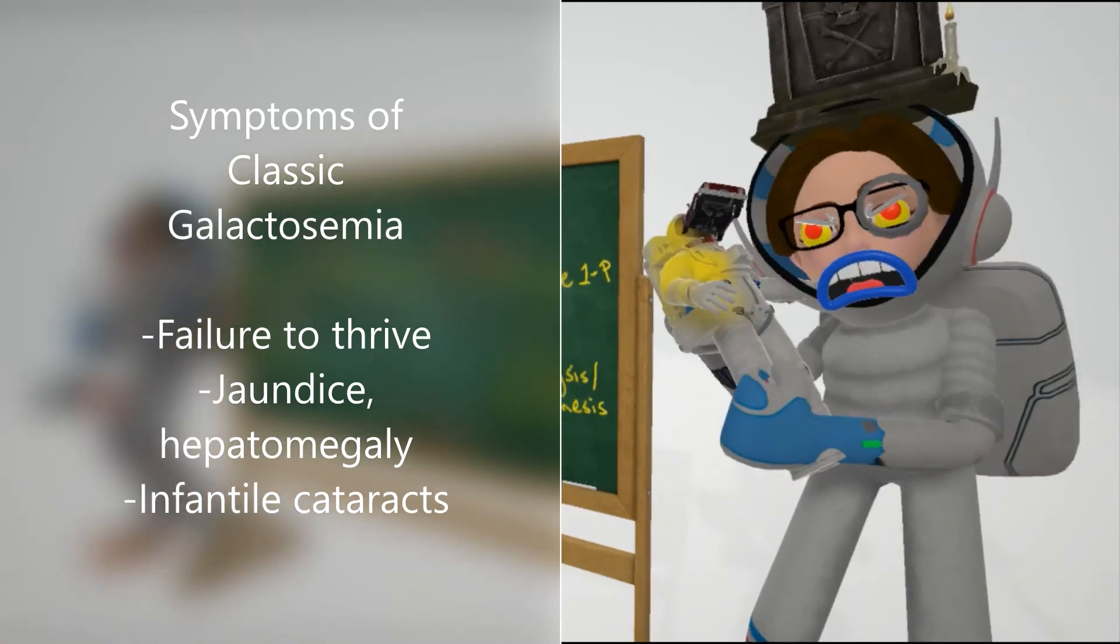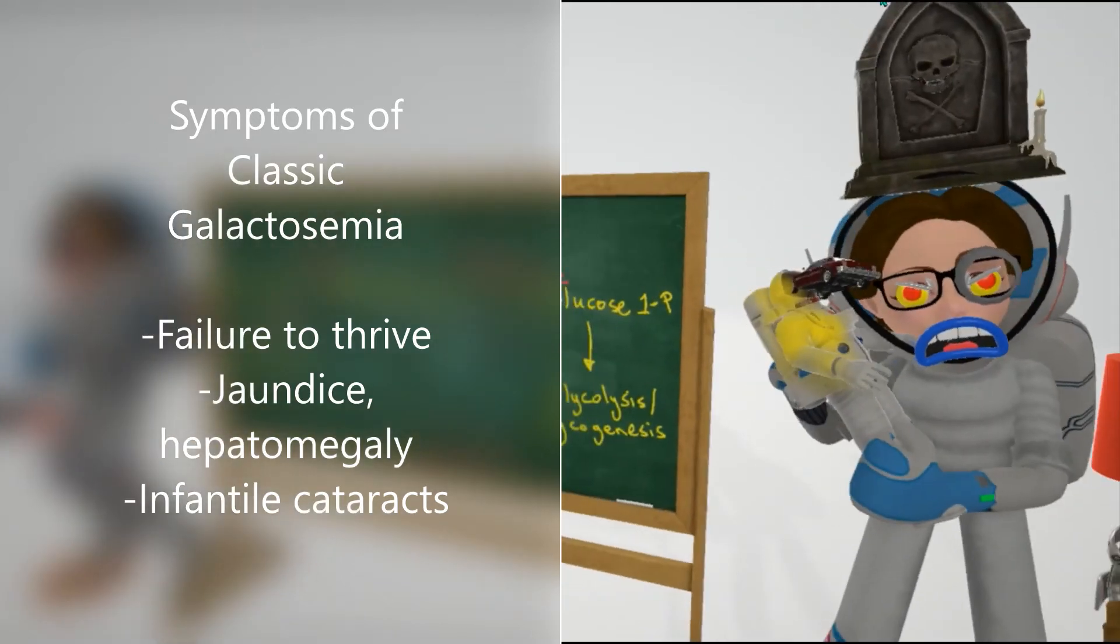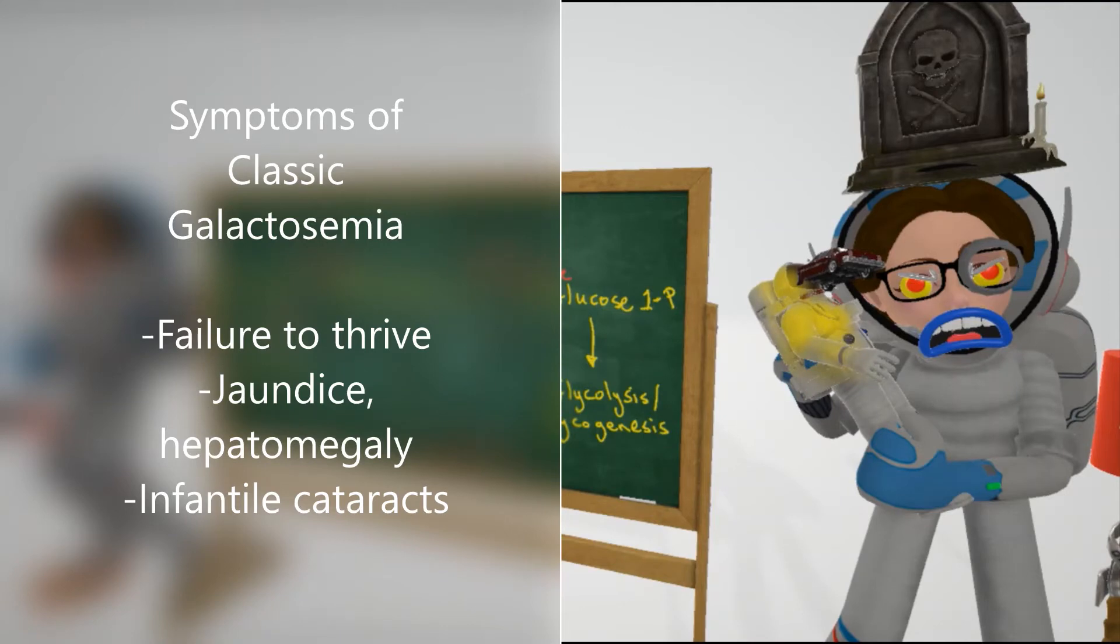We also notice that the baby is yellow to help us remember the jaundice associated with other liver problems including hepatomegaly. This child also has the cataract going through his eye, representing the infantile cataracts.